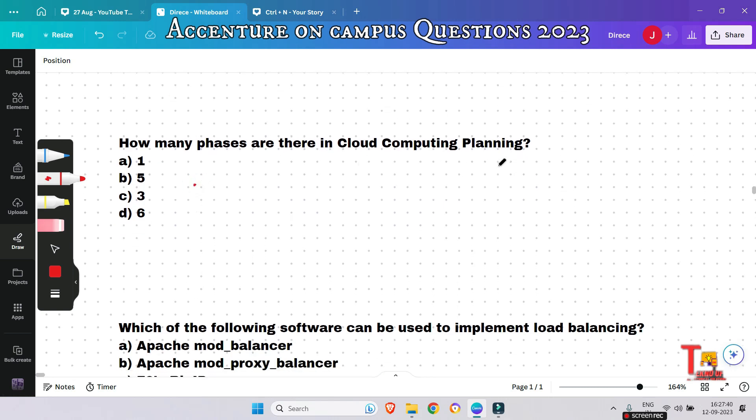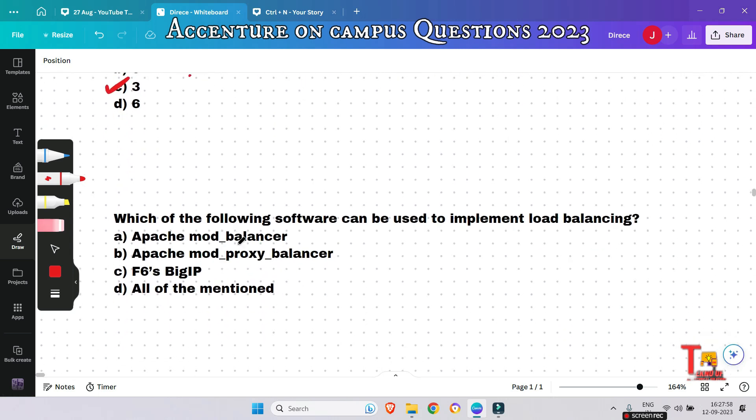How many phases are there in Cloud Computing Planning? 1, 5, 3, or 6? Actually, option C will be the correct answer. Strategy phase, Planning phase, and Deployment phase - these are the three phases of cloud computing.